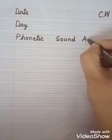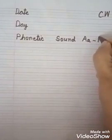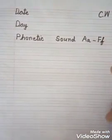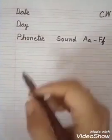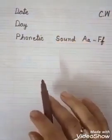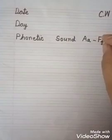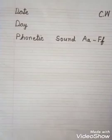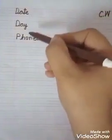Write capital A, then small a. Make a slipping line. Write down up to F — A to F. Today we will write phonetic sound from A to F. Whenever you do this work, you have to write the date and day according to that date. Whatever day you do this work, you will have to mention the date and day.